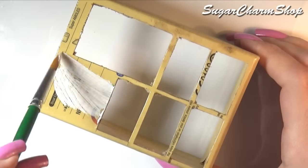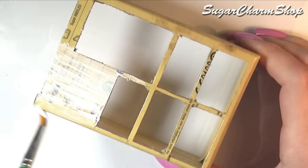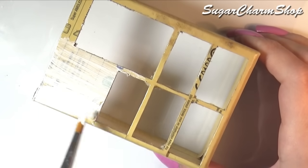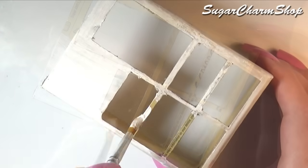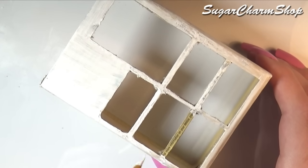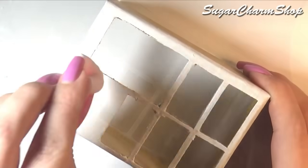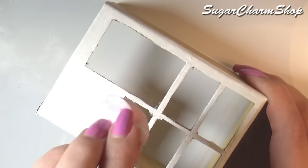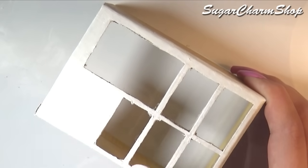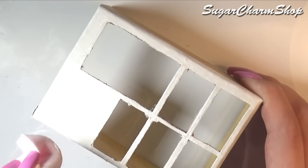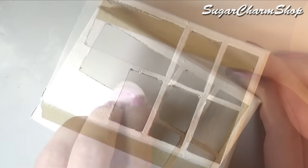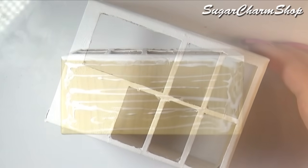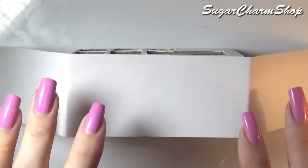Once you've done that, you can paint the top surface using white acrylic paint. And I covered the sides using cardstock.